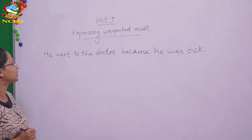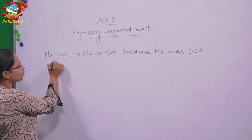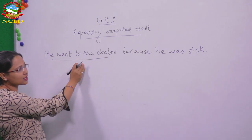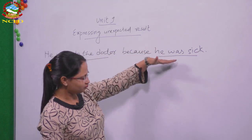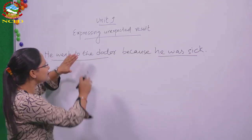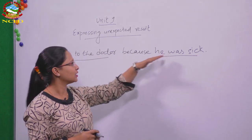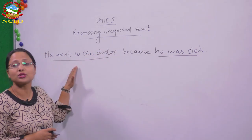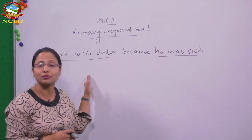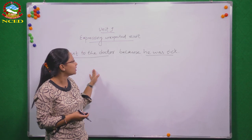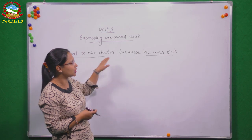So what does this sentence show? He went to the doctor — this is the action or the result, and the reason is he was sick. So 'because he was sick, he went to the doctor.' This is a sort of expected result, right? When somebody is sick, he or she usually goes to the doctor. So that is an expected result, and it's connected with 'because.'